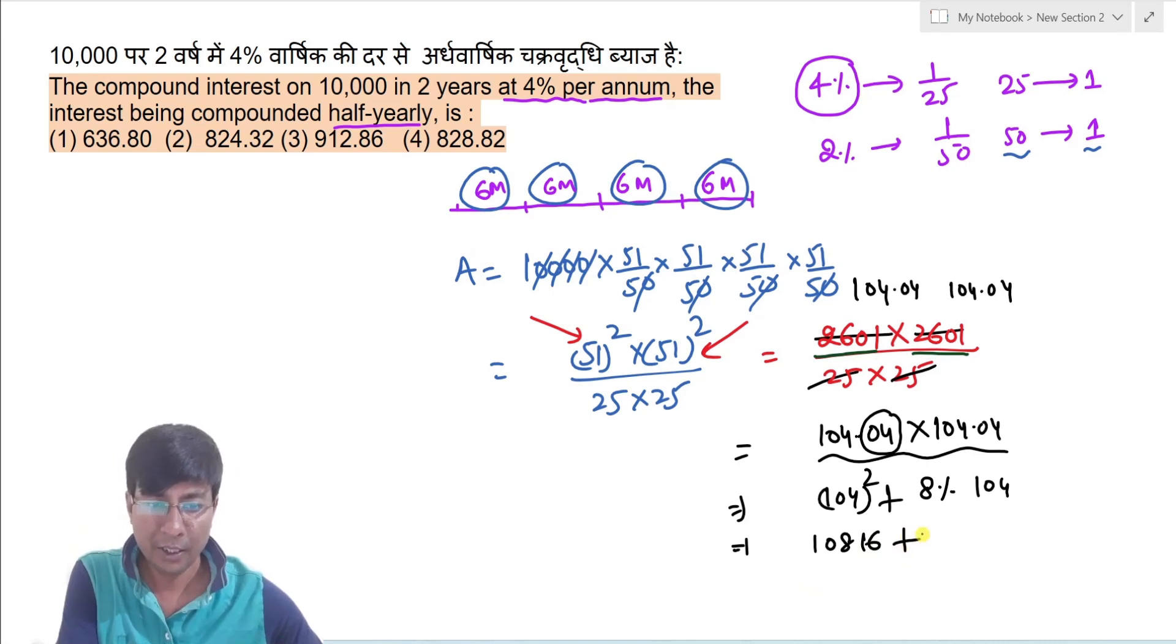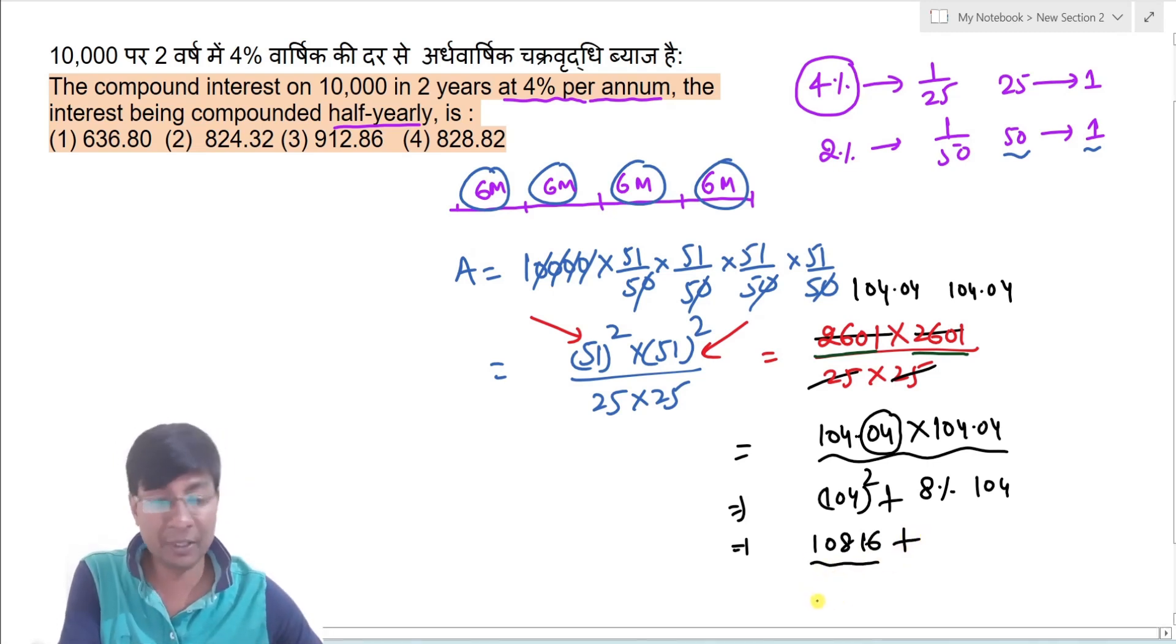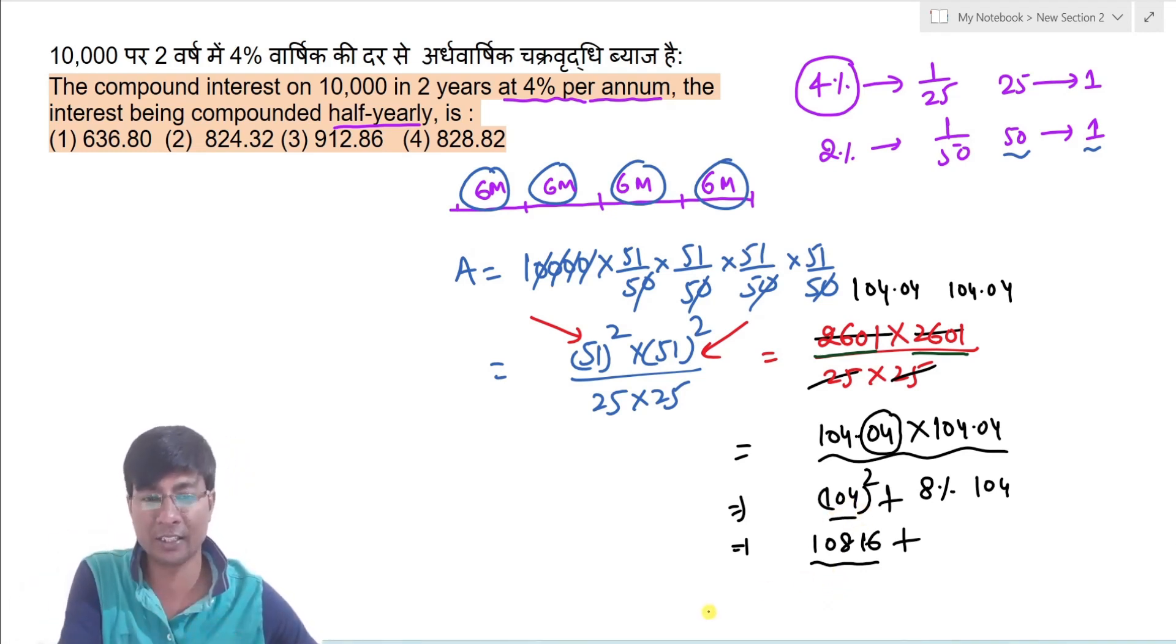Ab phir aapko lag raha hogi, yahan pe maine square kaise kar diya, toh phir mera wahi jawab hai, ki aap us video ko dekho. Kaise is number ko easily square kar dete hain, simple sa square ka tarika hota hai, 104 plus 4 aur slash 4 ka square 16. Toh ye value aata hai 108 aur 16.